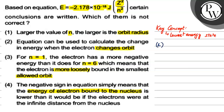Option one says larger the value of N, the larger is the orbit radius. This is right, because the radius is directly proportional to N square. So because N square is directly proportional to N, the larger the value of N, R will increase. This is a correct conclusion.